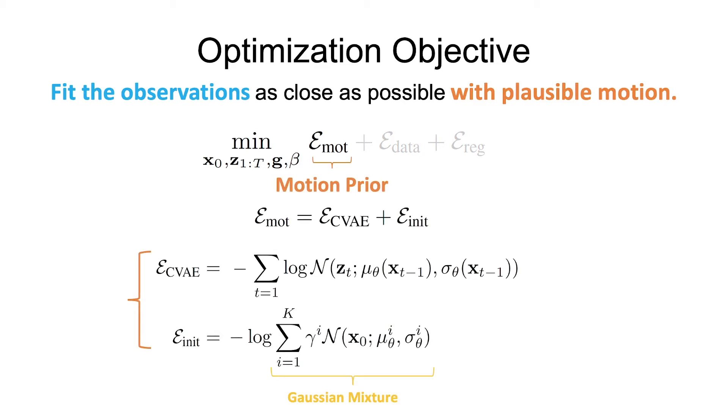The motion prior term encourages latent transitions to be likely under the Humor prior, as described previously. The Gaussian mixture model is also used as a prior over the initial pose, x0.